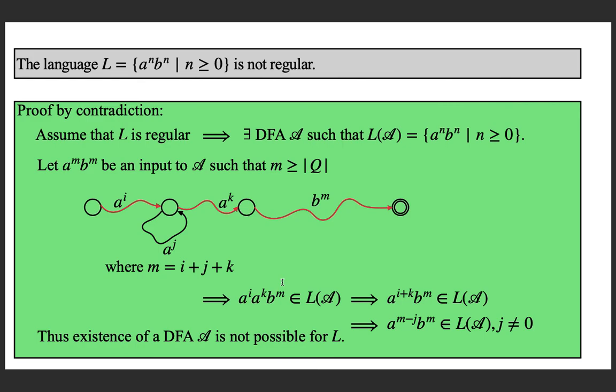This is a contradiction for the assumption that there exists a DFA. If there existed a DFA, it would accept some strings not in this language. Hence the existence of such a DFA is not possible — contradiction. So in this class we proved that the language a-raised-to-n b-raised-to-n, where n is a natural number, is not a regular language. There are non-regular languages. Tomorrow we are going to discuss a lemma known as the Pumping Lemma for proving that some languages are non-regular. Thank you.